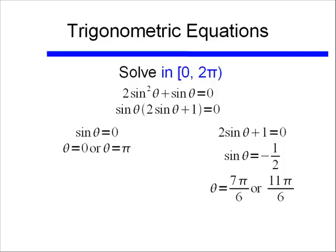Putting those all together, the solution to this question is theta is equal to 0, pi, 7 pi over 6, and 11 pi over 6. Those are the four answers that make my original equation true, given the fact I've been asked to solve this with answers going between 0 and 2 pi.